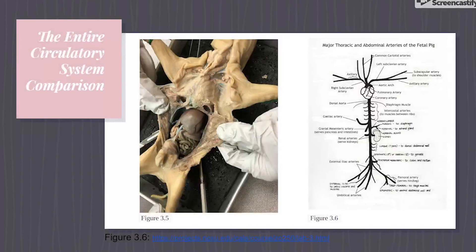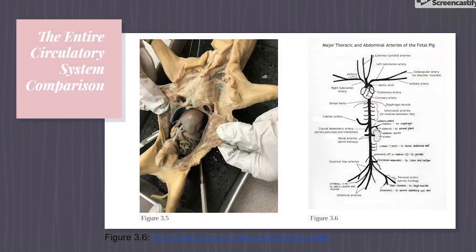In the comparison slide, Figures 3.5 and 3.6 show how the branches of the aorta supply blood to various areas, including the stomach via the celiac artery, the small intestine via the cranial mesenteric artery, the kidneys via the renal arteries, the hind limbs via the iliac arteries, and the placenta via the umbilical arteries. Branches of the caudal vena cava drain blood from the kidneys via the renal veins, and from the posterior limbs via the common iliac veins.